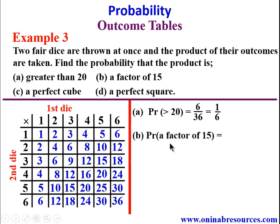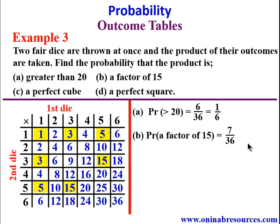For B, the probability of obtaining a factor of 15. Factors of 15 are 1, 3, 5, and 15 itself. We collect all entries that are factors of 15 from the outcome table: 1, 3, 5, 3, 15, 5, 15 — counting these gives 7 entries. The probability is 7/36. That is the end of solution to 3B.